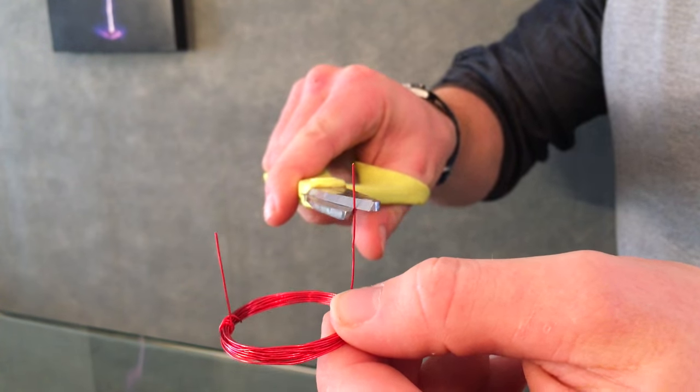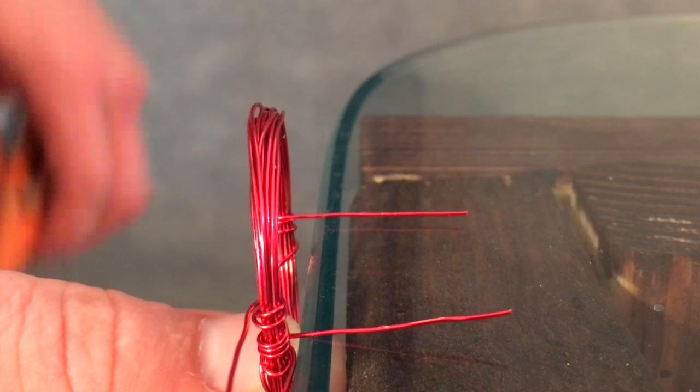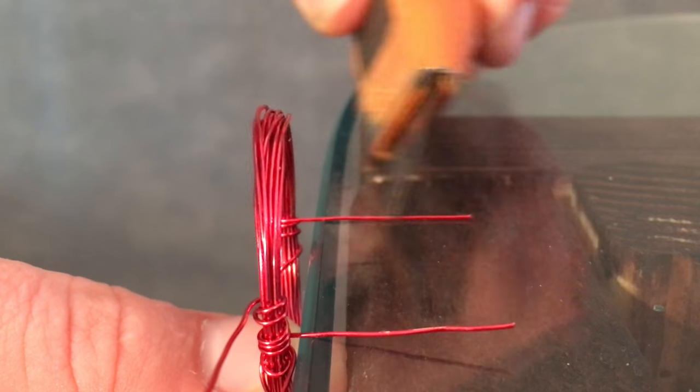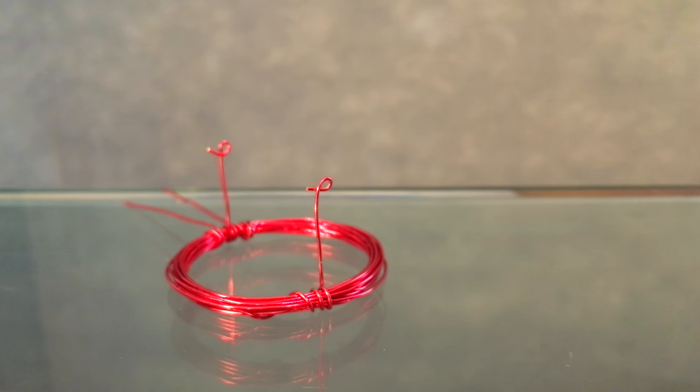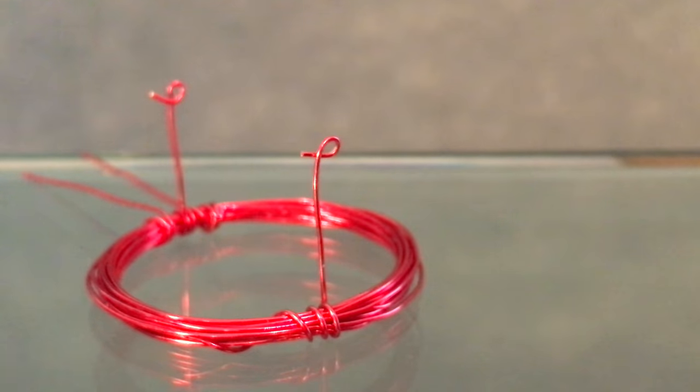Next, trim both supports to be one inch tall. Now scrape off the enamel from one side of both supports. Once the enamel is removed, bend them in a loop, like so, with the conductive side facing inward. Great, the base and supports are finished. Now on to the last step.